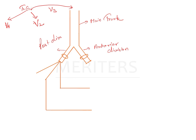Now what are the structures that are supplied by these nerves? The main trunk gives supply to the medial pterygoid muscle. Then you have the anterior division — this anterior division supplies the muscles of mastication, except the medial pterygoid, because the medial pterygoid is already supplied by the main trunk.